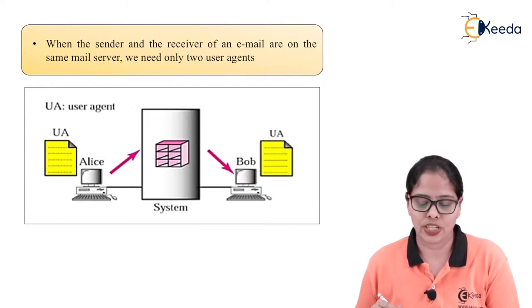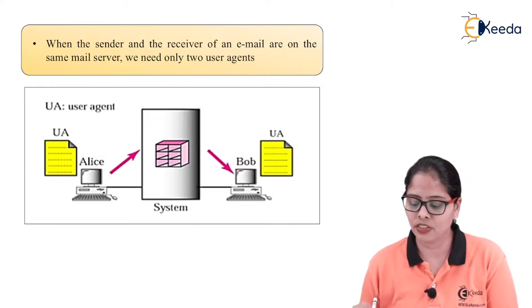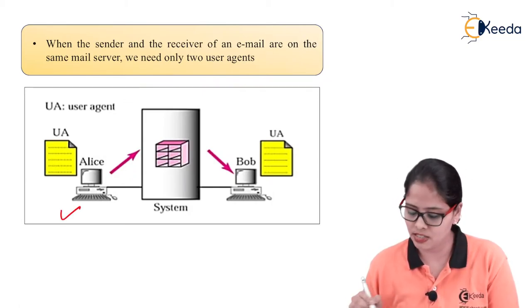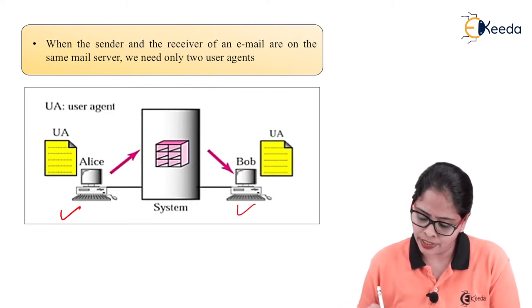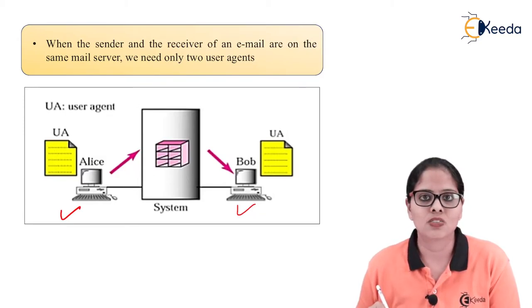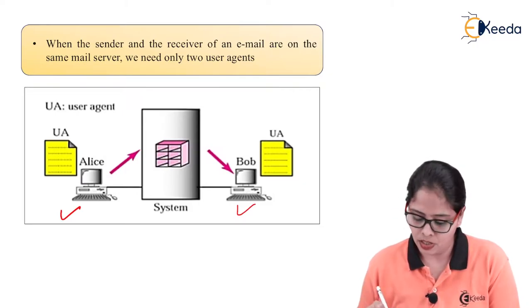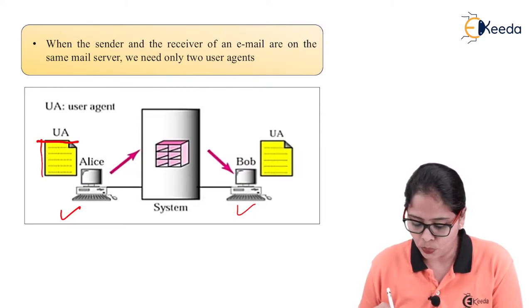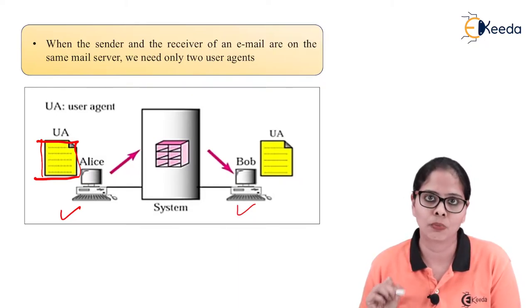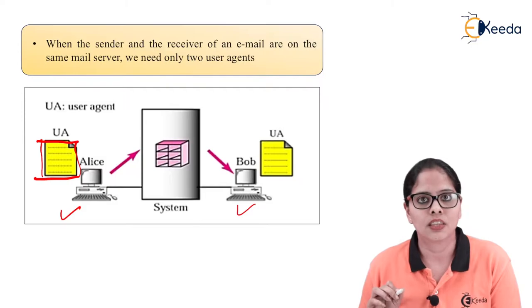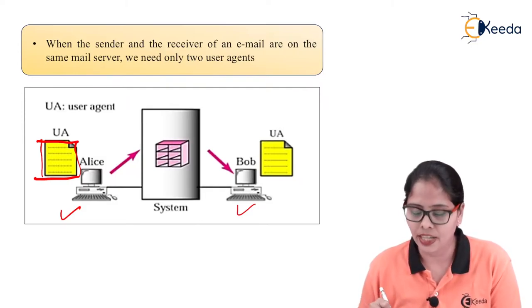The first situation is when the sender and receiver of an email are on the same mail server and we need only two user agents. My two users are Alice and Bob, directly connected to the system — a shared computer. Alice wants to send mail to Bob. First, Alice has to open his mail address, that is the user agent, open the mailbox, and with the help of the user agent, he can create the mail and then it is forwarded.